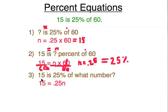On the third type, I've replaced the word is with equals, 25% with .25, and of means times. So I have .25 times n, and I can write that as .25n. To solve it, we just divide both sides by .25, and that will isolate the variable.